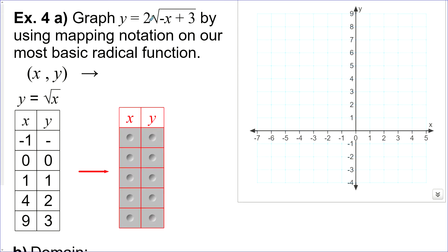Graph y equals 2 times the square root of negative x plus 3, by using mapping notation on our most basic radical function, y equals the square root of x. And here's the table of values from that function. Now, the same problem as last time, we can't see the transformations, because this reflection isn't factored out. So, the first thing I'm going to do is to change this, so that I can see the transformations properly. So, y equals 2, and the square root of negative. I'm going to factor it out. And then, x minus 3.